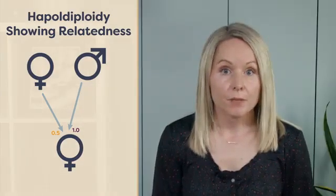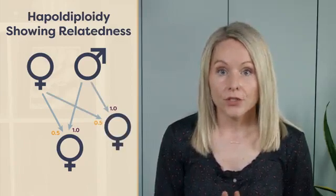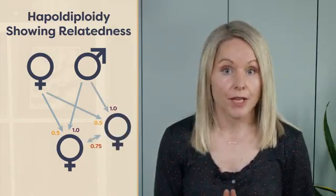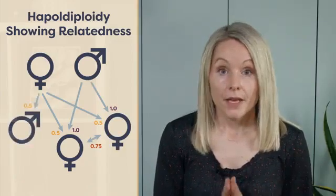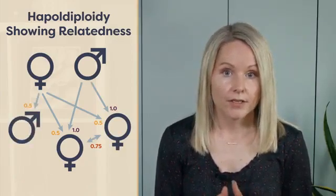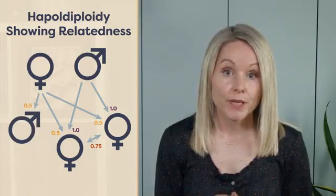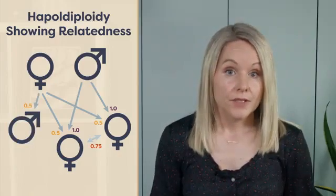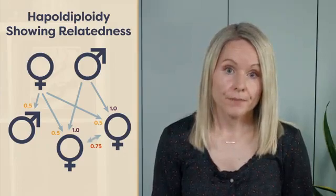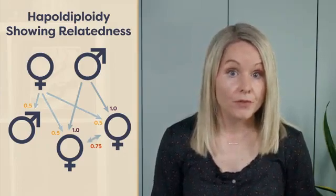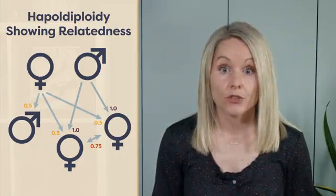If a queen bee mates with a single male, this results in sisters sharing 75% of their genetic code with each other. This is important when considered in the context of the genetic relationships between colony members. Full sisters are more closely related to each other than they would be to their own offspring, who would only share 50% of their genome with them. This means that more copies of a daughter's genes will be passed on to the next generation if she helps her mother produce more sisters, and not create offspring of her own.